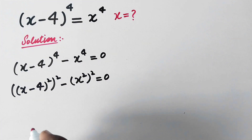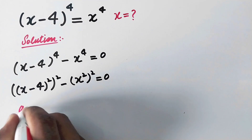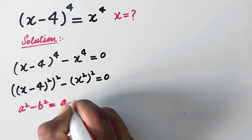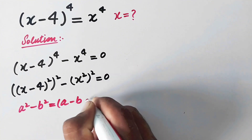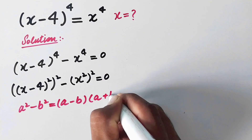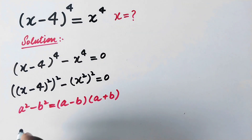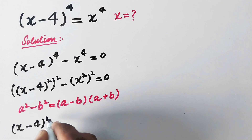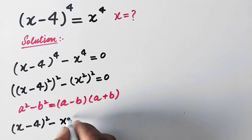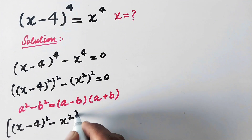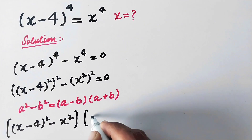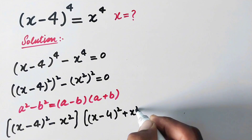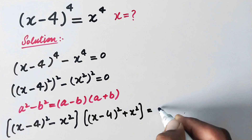Now here we can apply the algebraic formula: a squared minus b squared is equal to (a minus b) times (a plus b). So now we can write [(x-4)^2 minus x^2] times [(x-4)^2 plus x^2] is equal to 0.